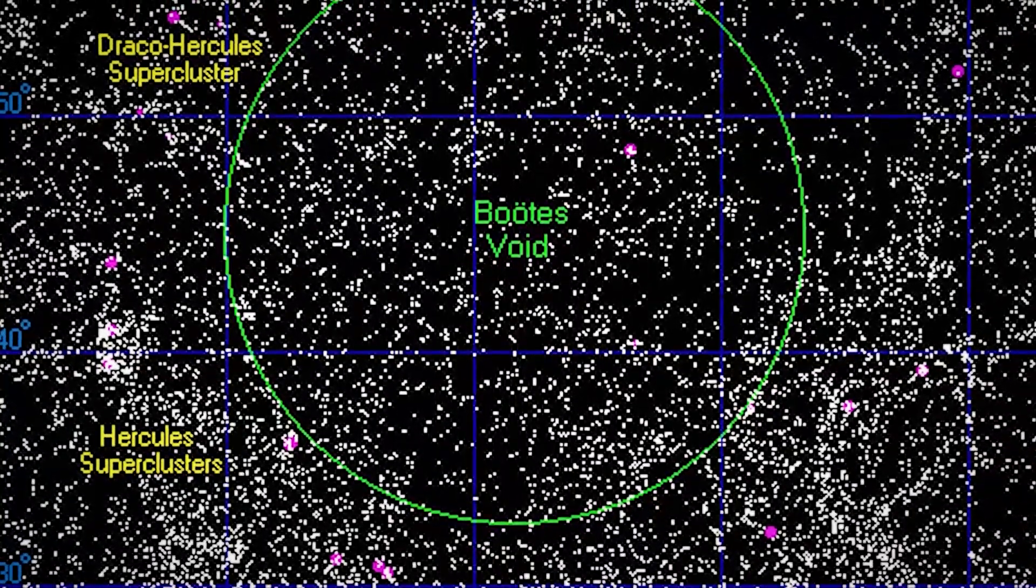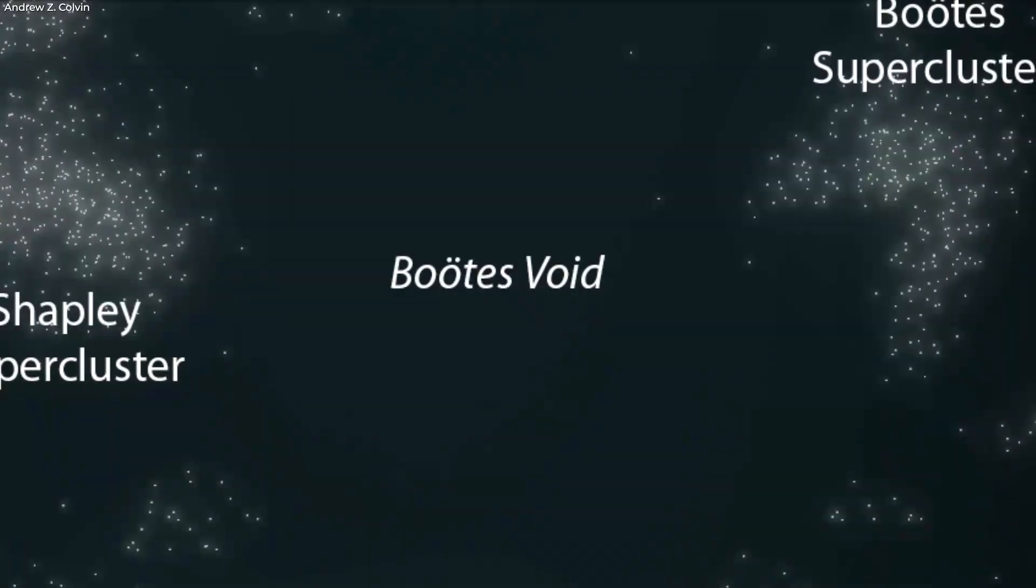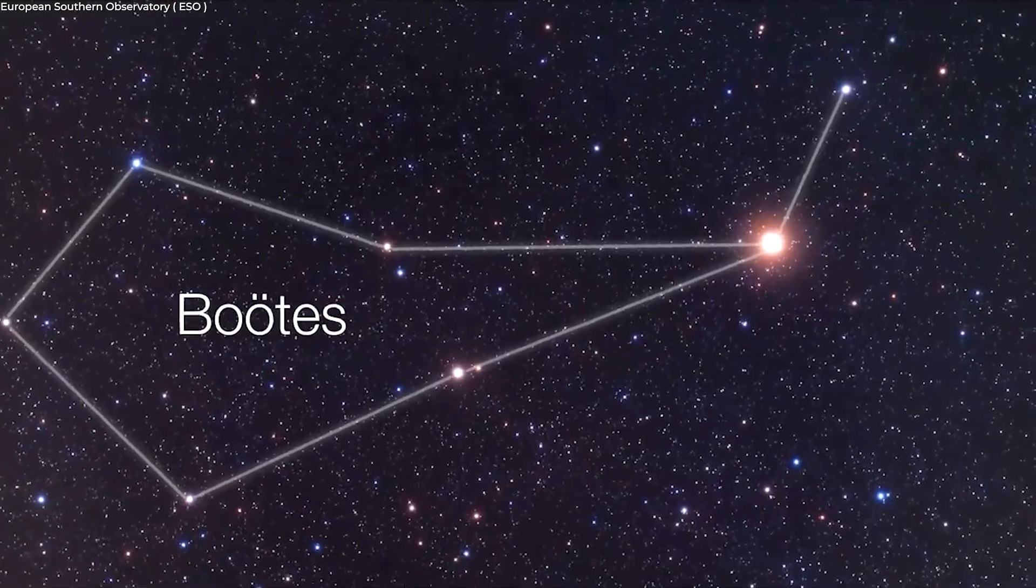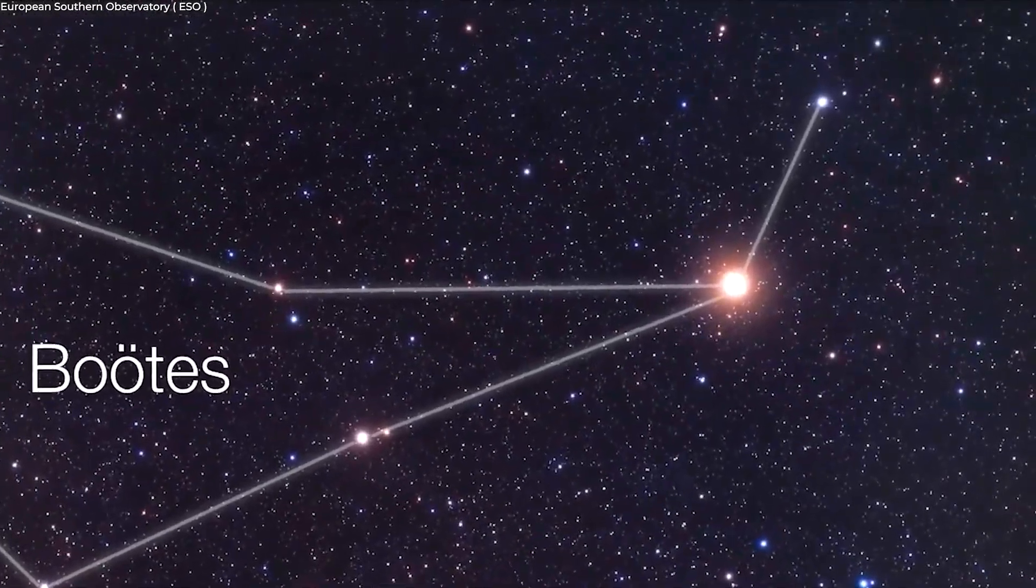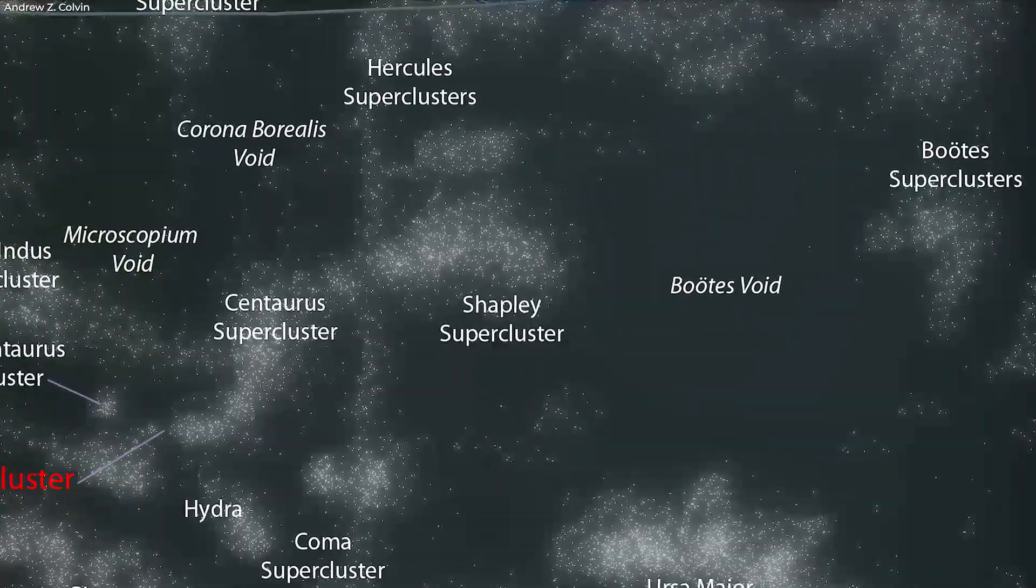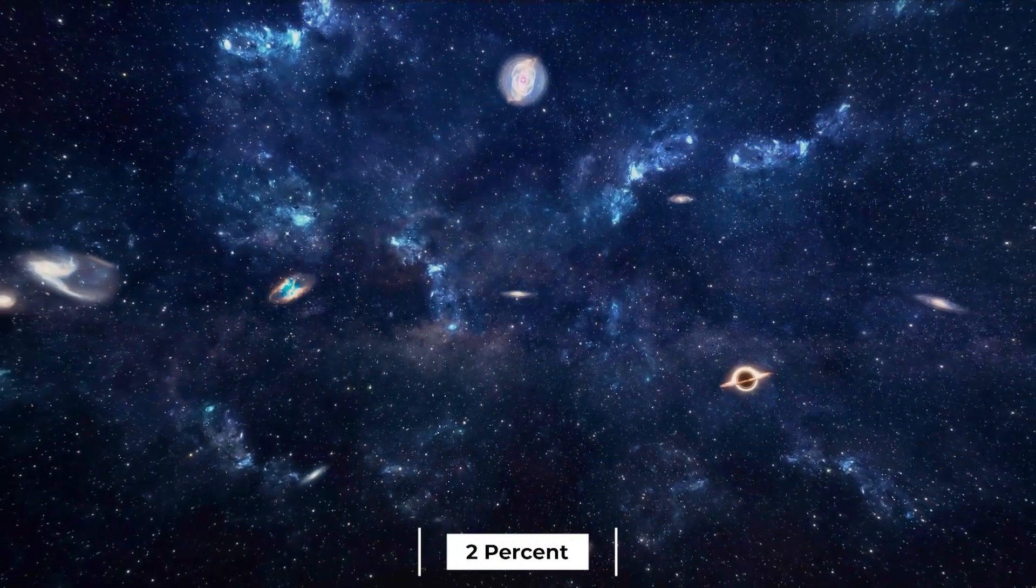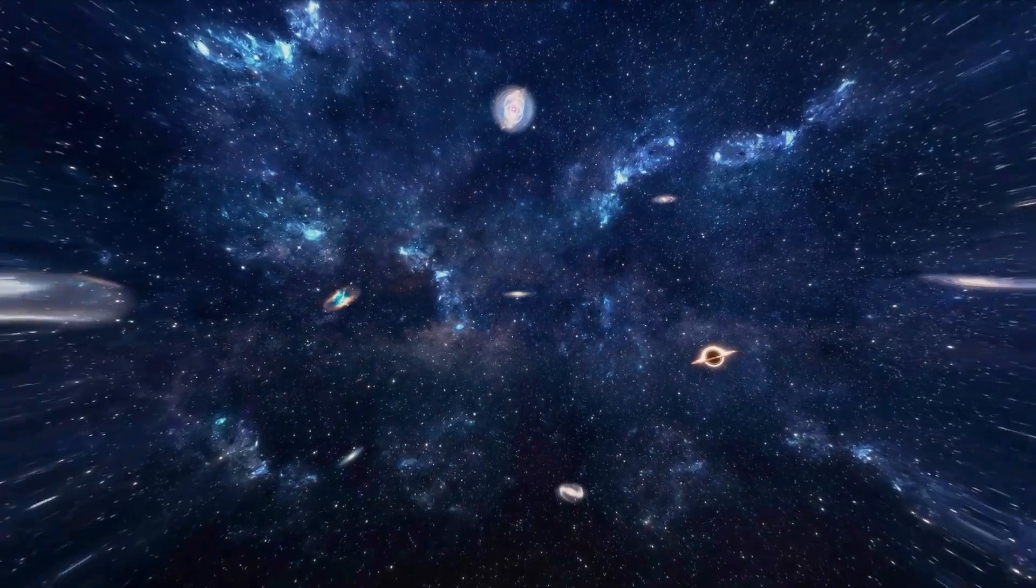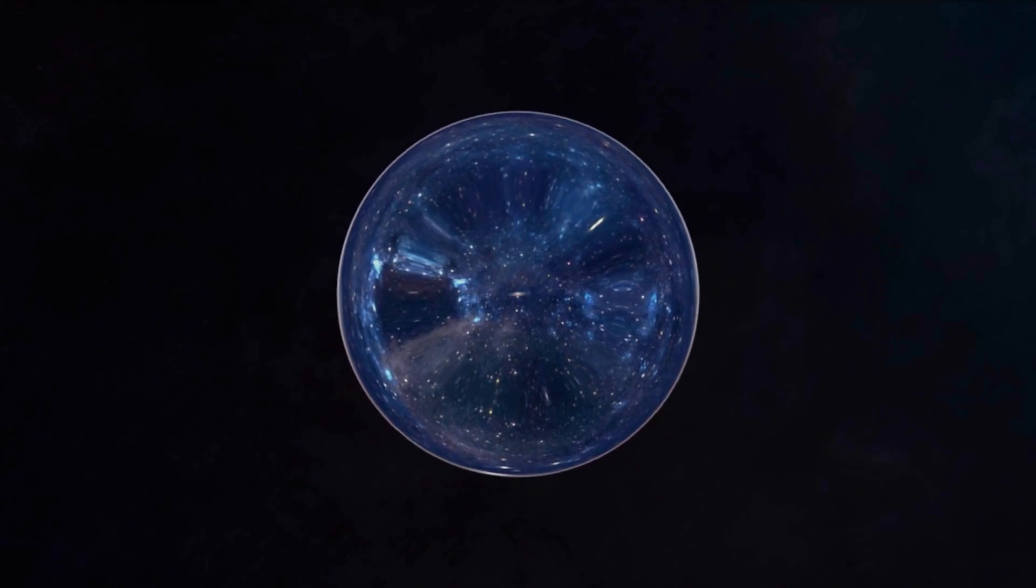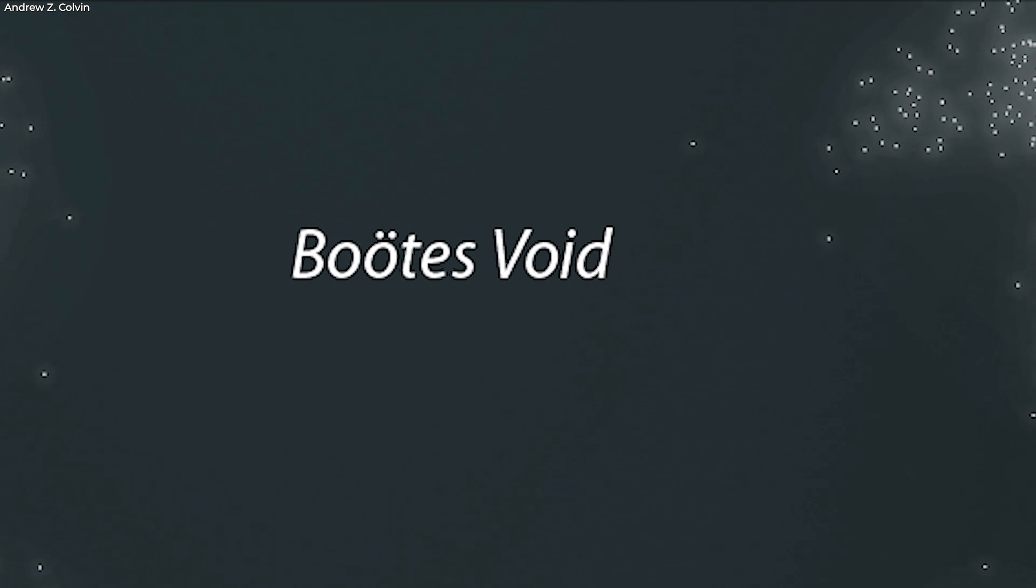The Boötes void is the largest void that has been discovered in the known universe. It is a region 330 million light years across, located in the direction of the constellation Boötes, which only contains a few dozen galaxies. The Boötes void is so huge that it has a diameter that is 2% of the size of the known universe. Yes, the entire universe, which itself is a daunting 93 billion light years across.